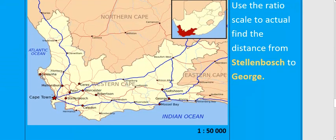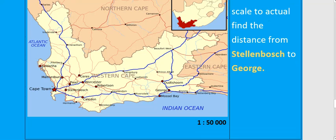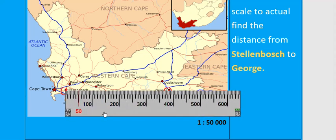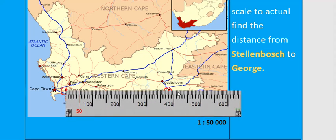Let's do a calculation. You are asked to use a scale to find the actual distance. How can we use the scale to find the actual distance from Stellenbosch to George? Stellenbosch is over here and George is over there. Before we can use our scale to find the distance, we first need to measure. You could do this using a ruler, so we measure the distance from Stellenbosch to George — it's about 285 millimeters, more or less.